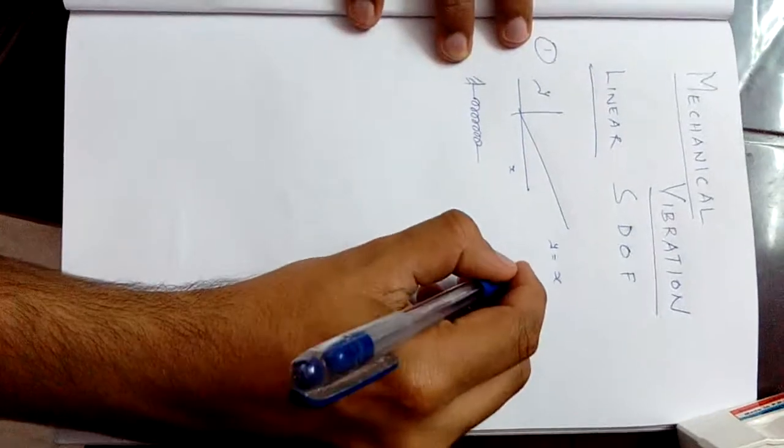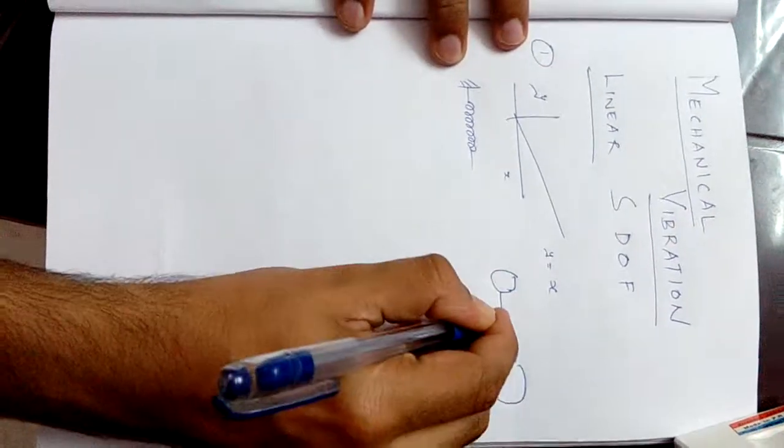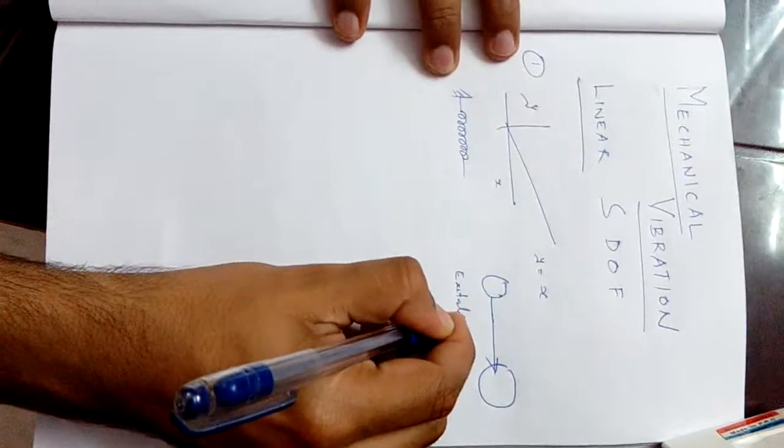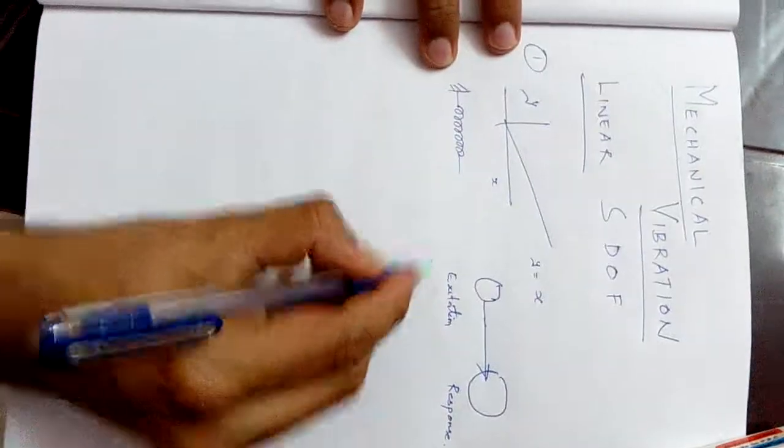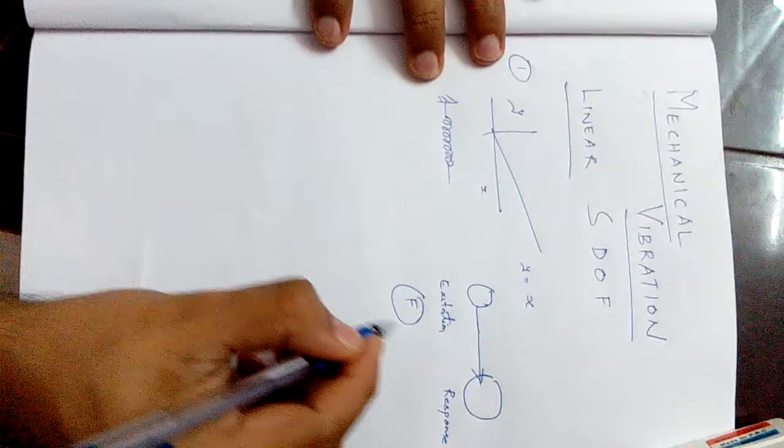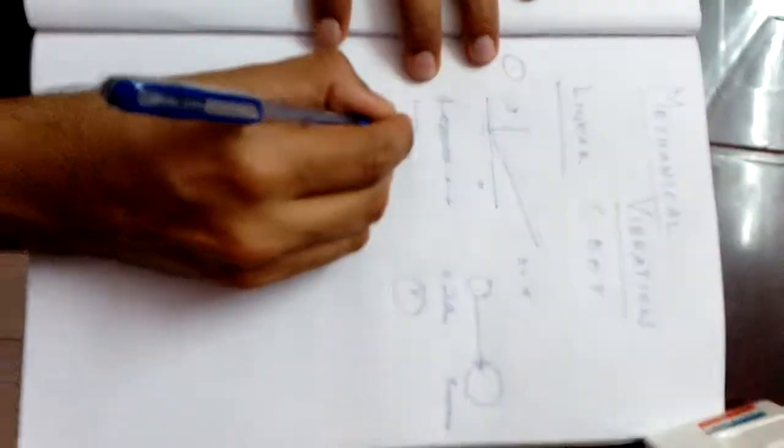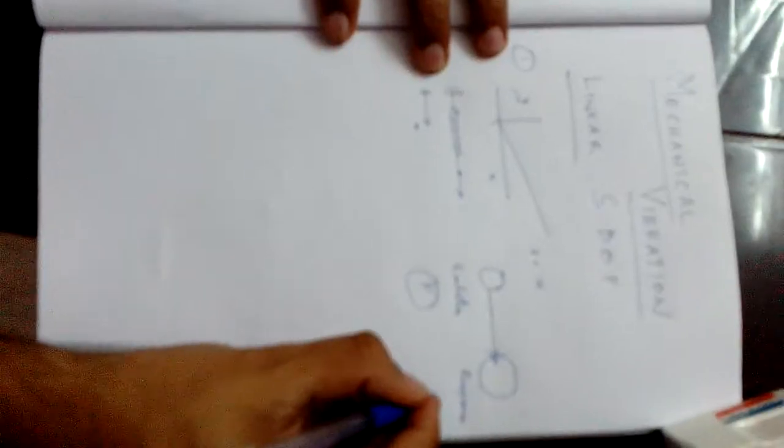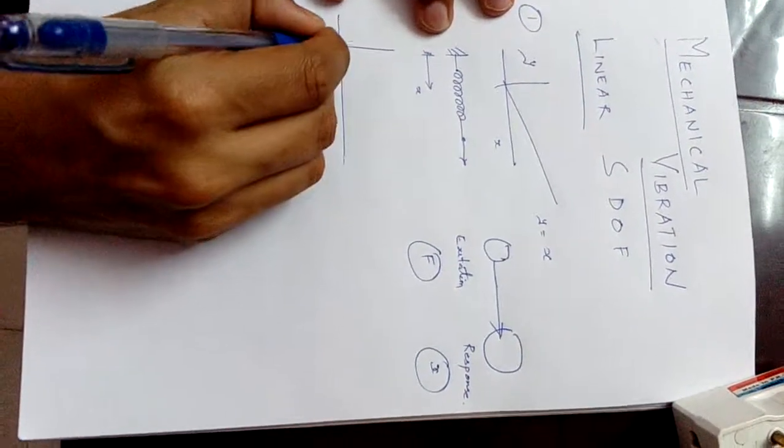This is your excitation and this is response. In a spring case, the excitation is the force acting on it, and the response is the displacement of the spring defined as x. If this particular relation is linear, then the system is called linear.